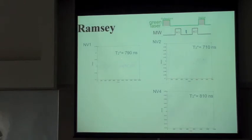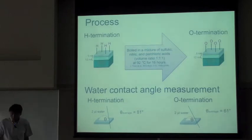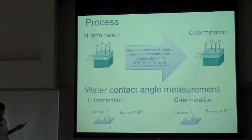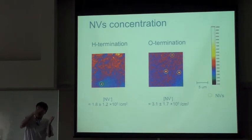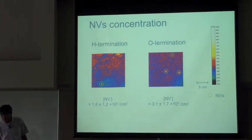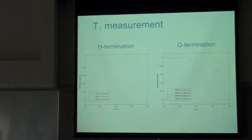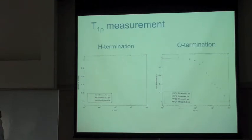T2* in such NV centers is also quite long — around 800 nanoseconds. Now we move on to surface chemistry: we want to change the surface from hydrogen-terminated to oxygen-terminated. If we do this, we actually have a slight increase in NV minus concentration due to suppression of the band bending. We also measure how T1 changes — between hydrogen termination and oxygen termination, T1 doesn't change so much, about 3 milliseconds.